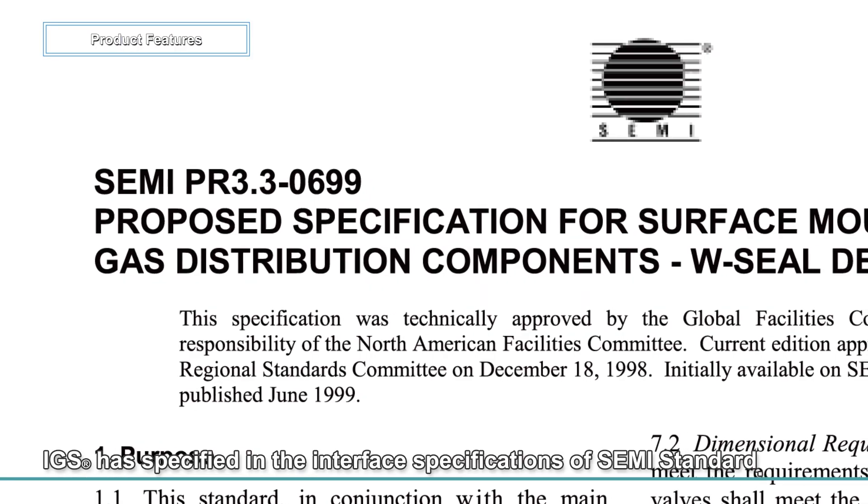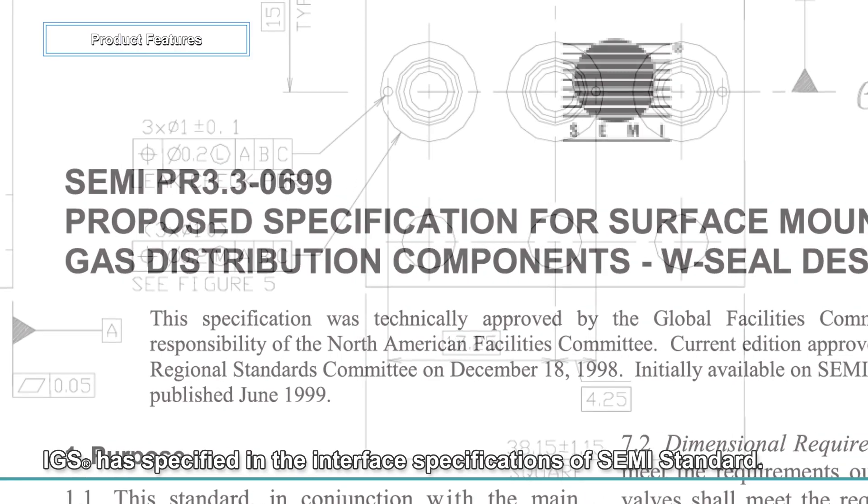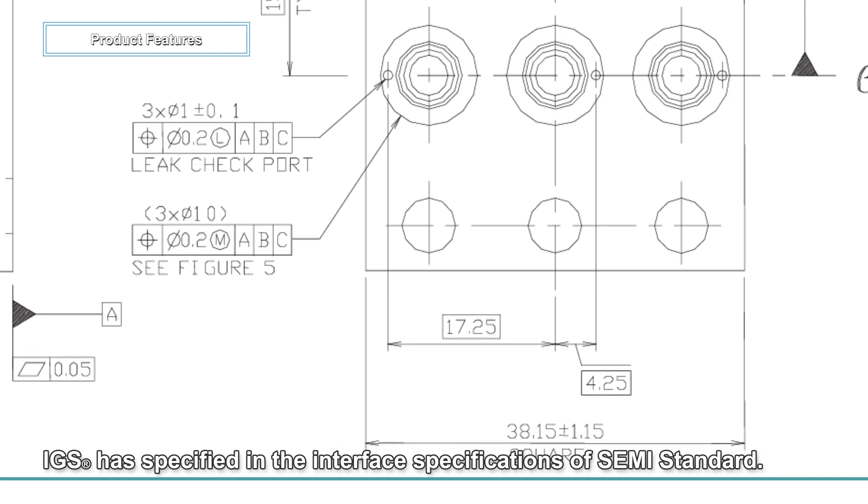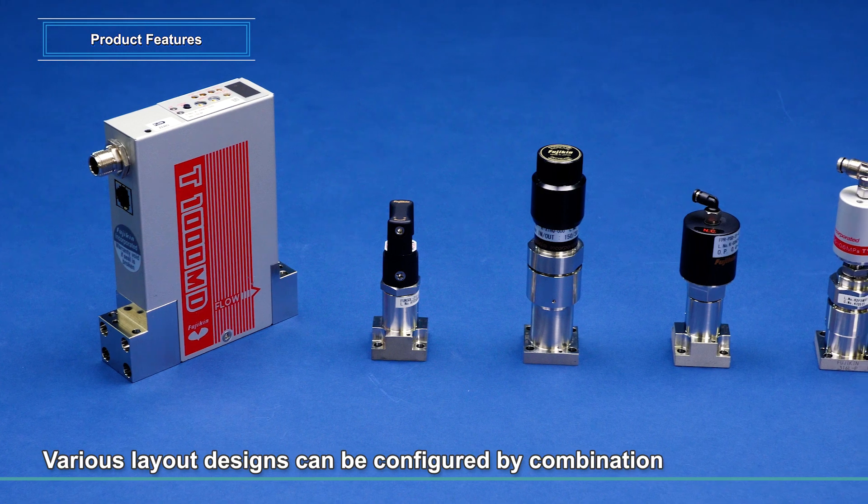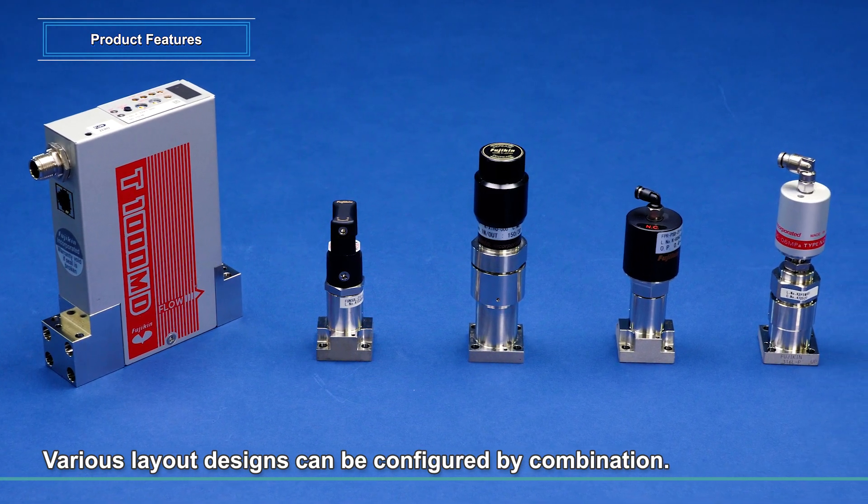FUJIKIN IGS has specified seal-to-seal dimensions and sizes in the interface specifications of the semi-standard. Various layout designs can be flexibly configured by combination.